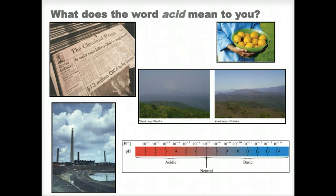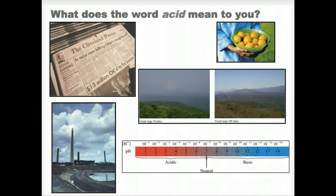One way to define an acid is as a substance that releases hydrogen ions into aqueous solution. Because the hydrogen ion has no electron and only one proton — hence its positive charge — the hydrogen ion is sometimes referred to as a proton.